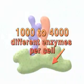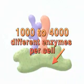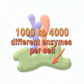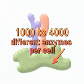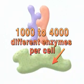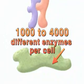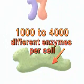Each cell contains from 1,000 to 4,000 different types of enzymes, each with a specific substrate that it can catalyze.